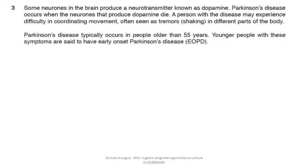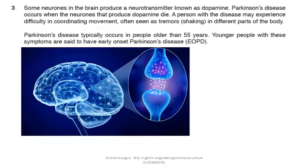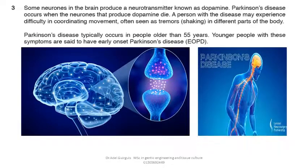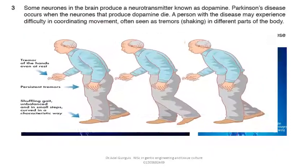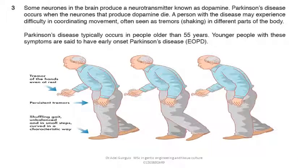Some neurons in the brain produce a neurotransmitter known as dopamine. Parkinson's disease occurs when the neurons that produce dopamine die. A person with the disease may experience difficulty in coordinating movement, often seen as tremors and shaking in different parts of the body. Parkinson's disease typically occurs in people older than 55 years. Younger people with these symptoms are said to have early-onset Parkinson's disease, EOPD.